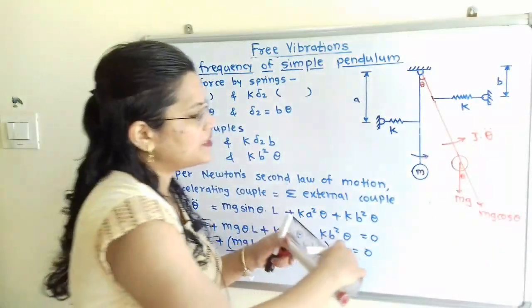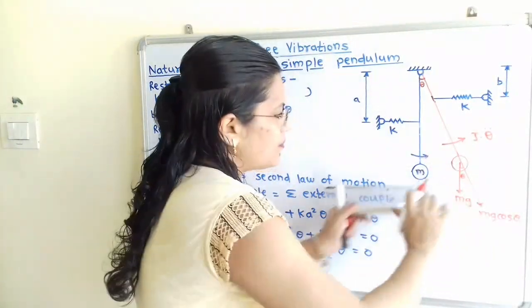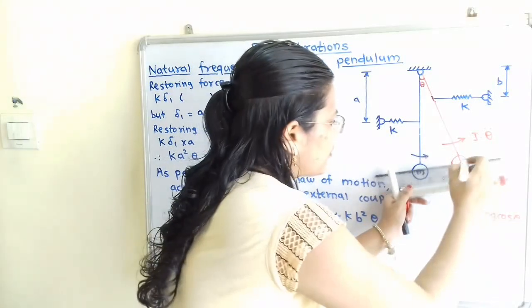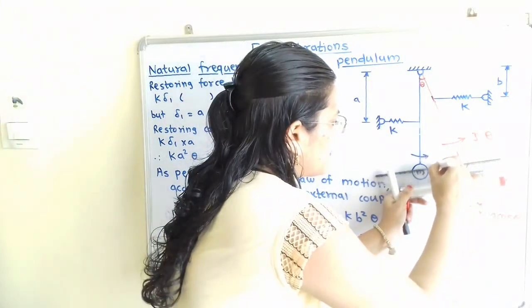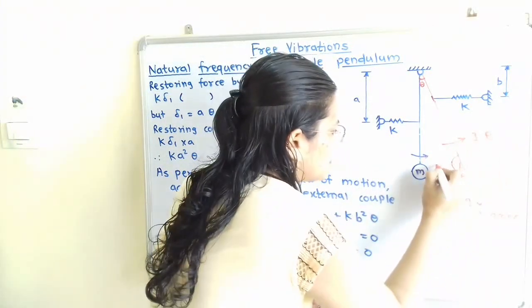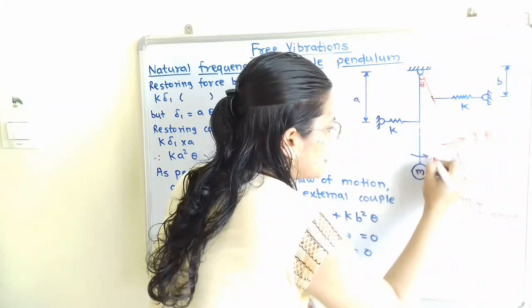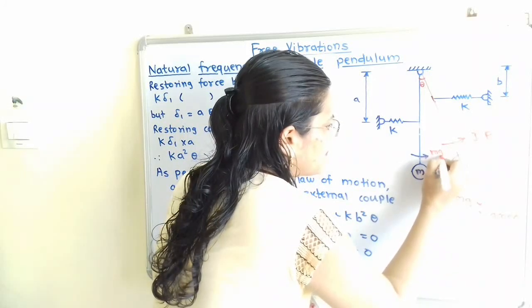The second component is perpendicular to the first component. We draw a perpendicular line passing through the center, and its value is Mg sin theta.